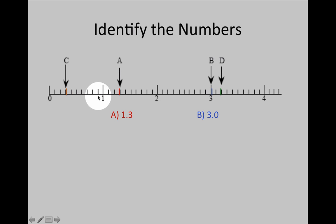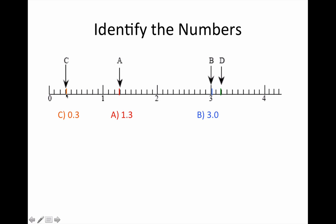C falls between 0 and 1, so it's going to be 0 point something. Counting: 1 tenth, 2 tenths, 3 tenths. So C is 0 and 3 tenths.